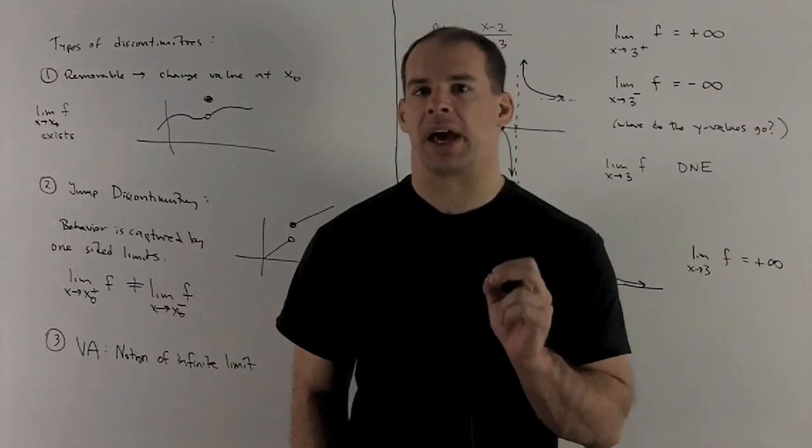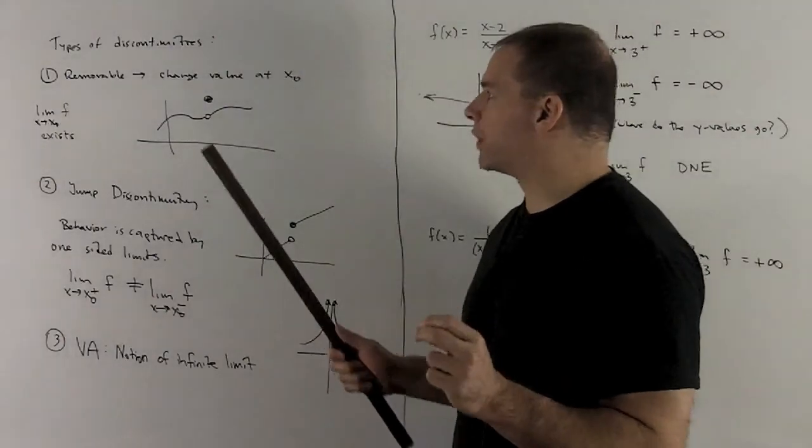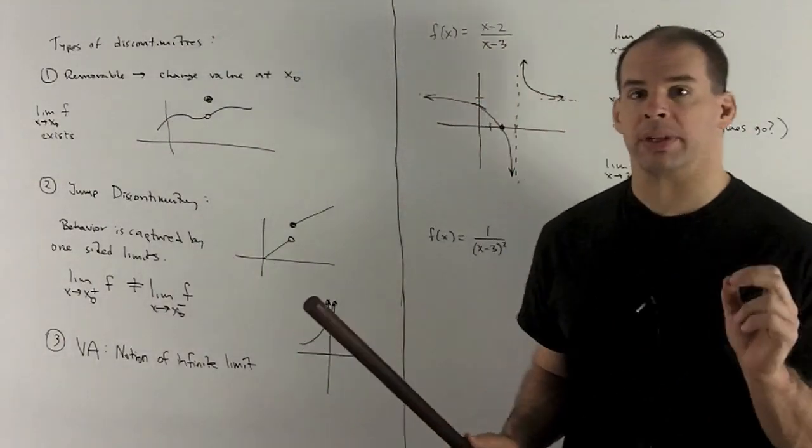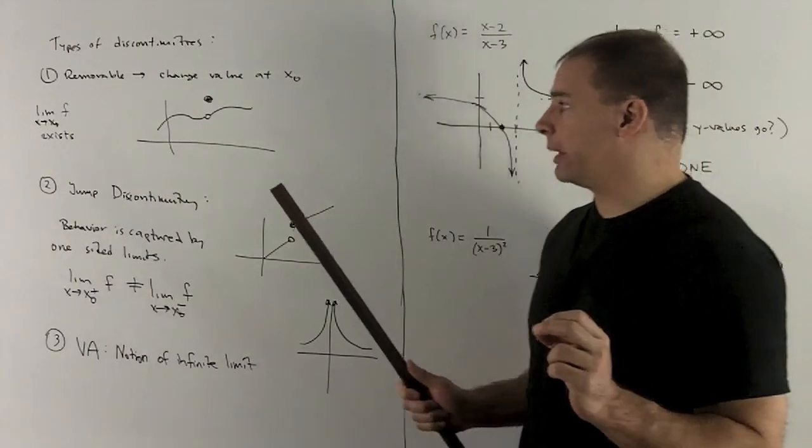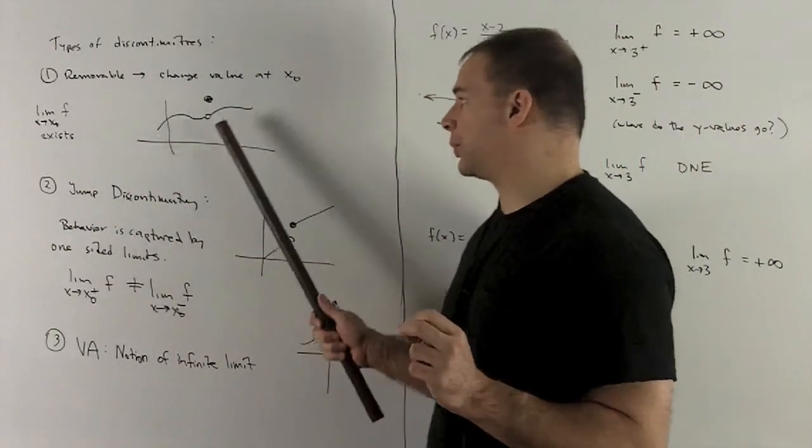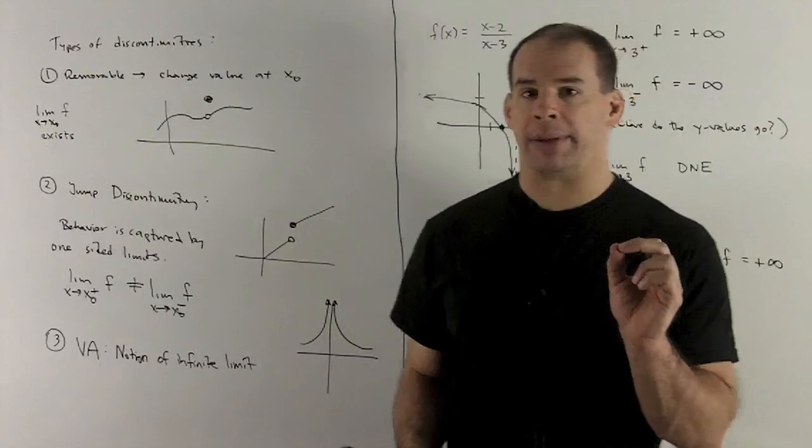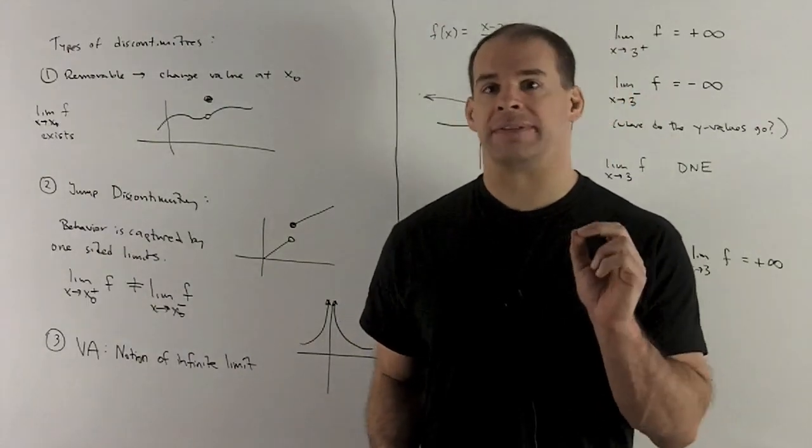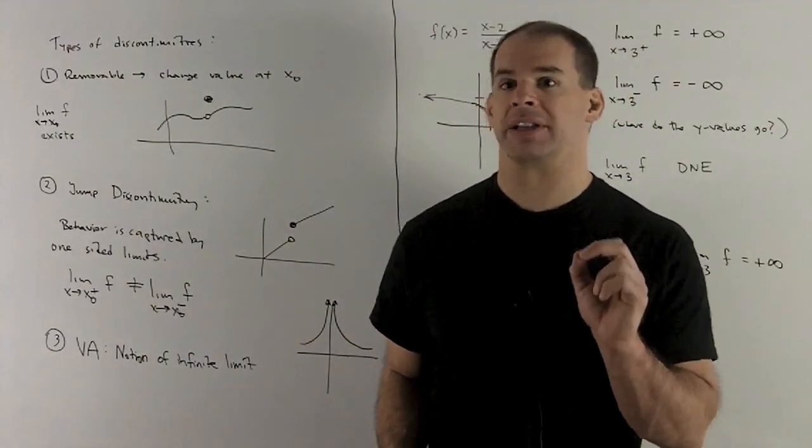So let's review the different types of discontinuities. In the first case, we have a removable discontinuity, which just means the limit at your point is going to exist. It's just probably not defined at all, or not defined at the point that best fits.